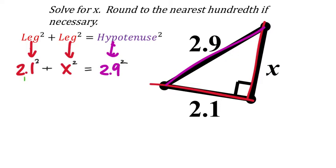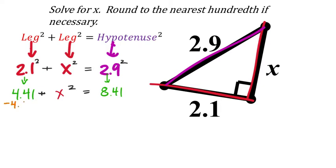I'm going to need a calculator for some of this — we're squaring decimal values. 2.1 to the power of 2: enter, 4.41. And 2.9 to the power of 2: enter, 8.41. We need to solve for X, so I need to isolate X squared. I'll zero out the 4.41 by subtracting it from both sides. That comes out as a nice clean 4 on the right. The 4.41 zeroes out.